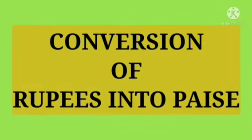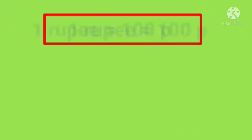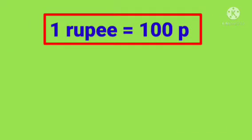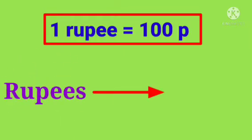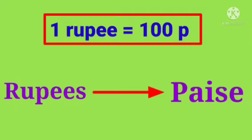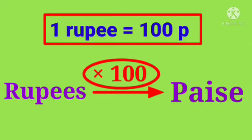First let us learn conversion of rupees into paise. We know 1 rupee is equal to 100 paise. So to convert rupees into paise, we have to multiply by 100.